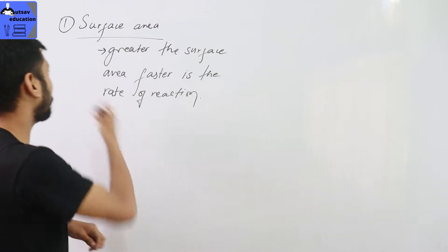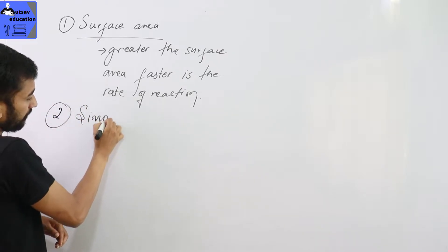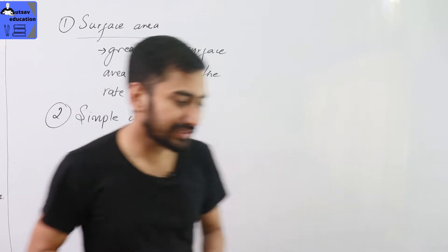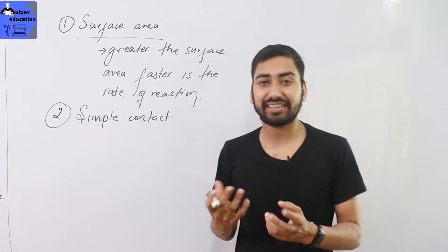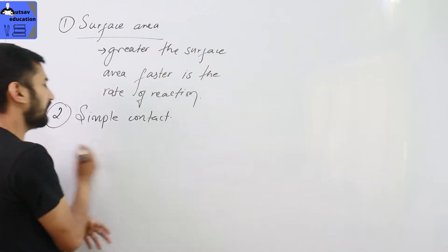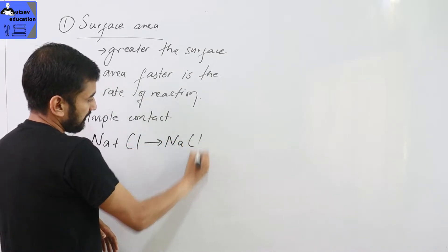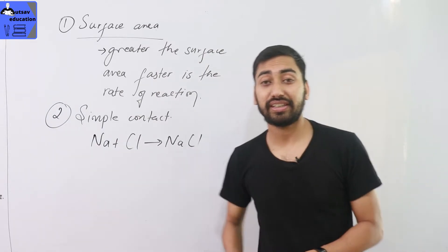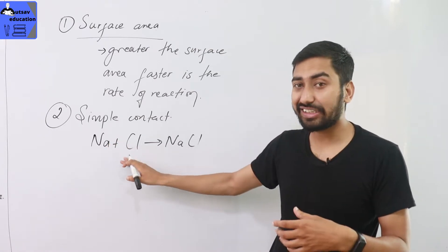Some chemical reactions take place under simple contact. For example, sodium and chlorine — Na plus Cl gives sodium chloride. It is simple contact. Sodium is a highly reactive metal, and chlorine is a highly reactive and poisonous gas, but their reaction produces common salt — NaCl — which is table salt.